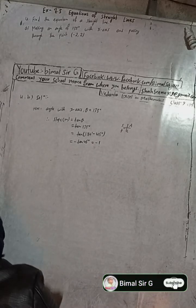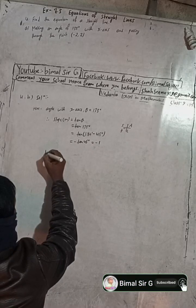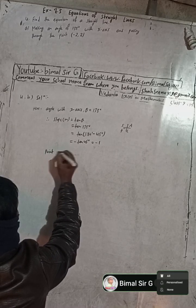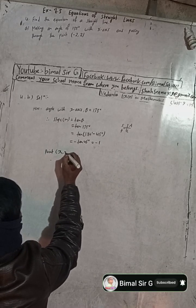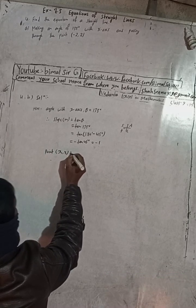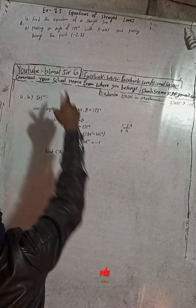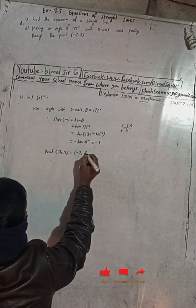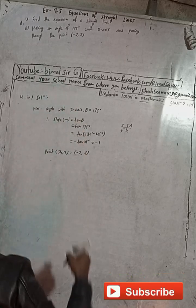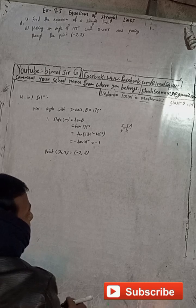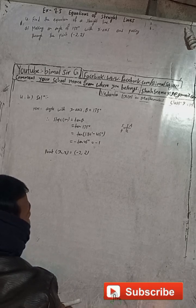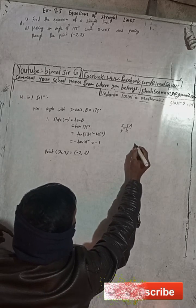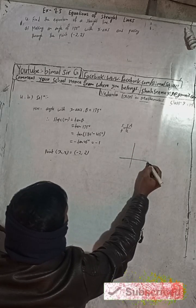We have to find the equation of this line. If you want to understand, suppose this is our xy-axis. The line makes 135 degrees — since 90 degrees is vertical, 135 degrees is 45 degrees past the vertical into the second quadrant, so the line slopes like this.